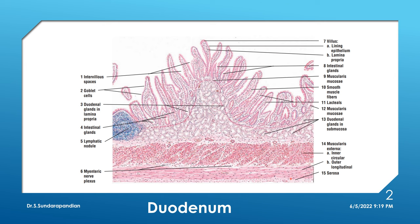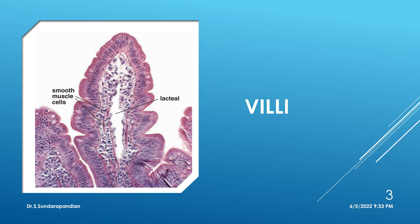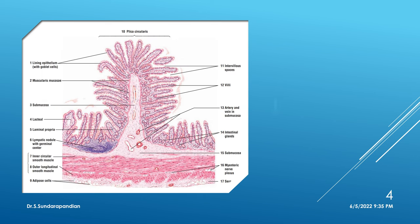To identify the slide of duodenum: see for the basic four layers, then see for the villi, then concentrate on submucosa — it will have Brunner's glands. In the lamina propria of the villi you can make out blood vessels and lymph vessels. The lymph vessel present in the villi is called a lacteal.